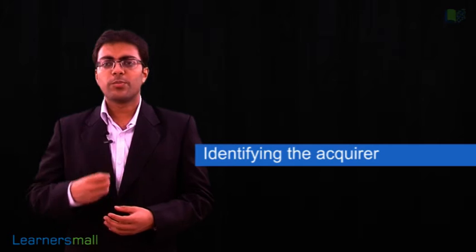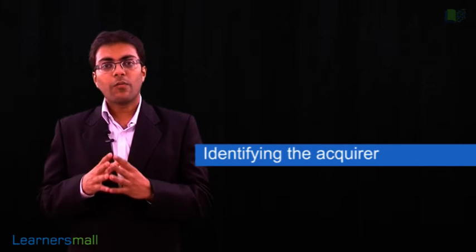Now let's understand some important steps in the acquisition method. The first step is identifying the acquirer. An acquirer is the entity that obtains control over one or more businesses. Generally, it can be very straightforward to identify who the acquirer is — usually the one who has paid the consideration in terms of assets, cash, or equity instruments. However, in some cases it can be very complicated, especially where there has been an exchange of equity instruments. In such cases, one should follow the guidance prescribed under IND-AS 110, i.e., Consolidated Financial Statements. The acquirer would be the entity that has ultimately obtained control over the businesses.